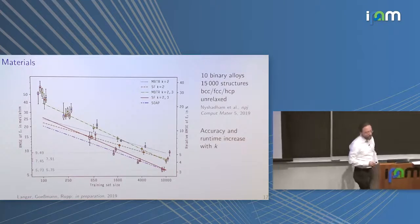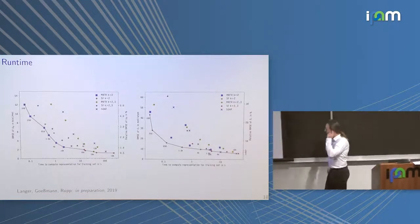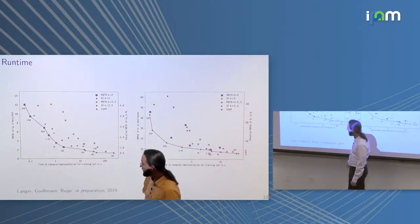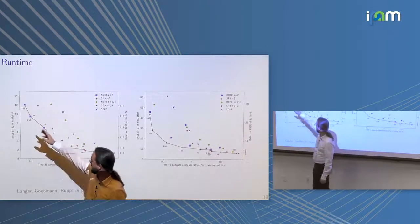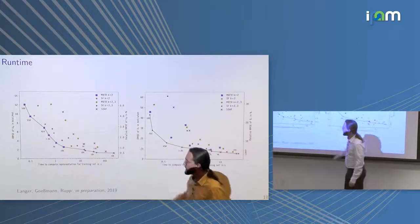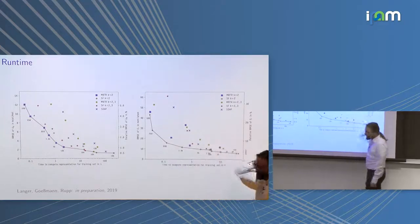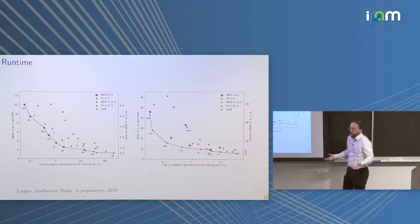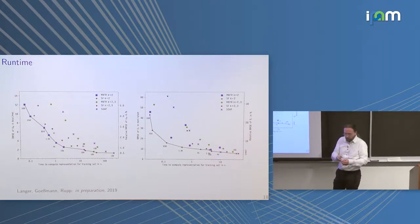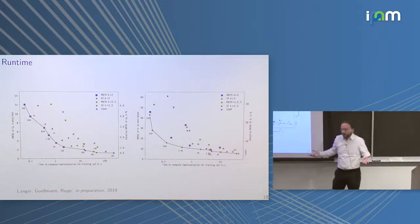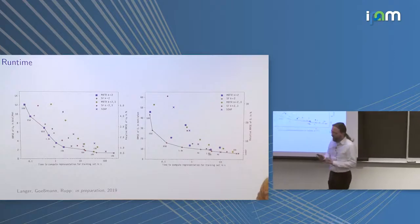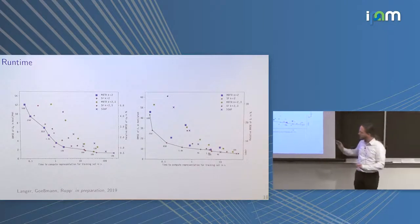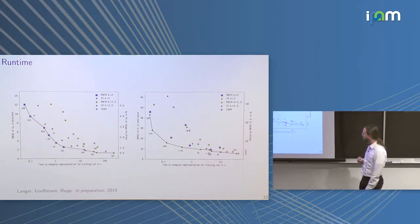One more aspect is runtime. Pareto plots show the time to compute the features versus the error — you want to be in the lower left corner. The higher the interaction order, the more time you need to invest, because going over three-tuples instead of two-tuples naturally requires more computation. These results are not yet published but are reasonably converged. If you know how accurate you need to be, you can choose the fastest method that meets that requirement.